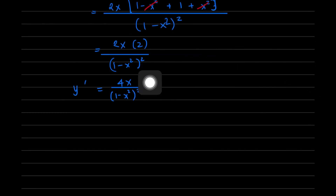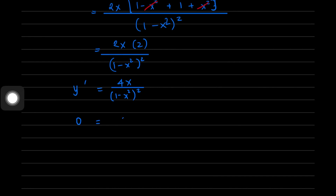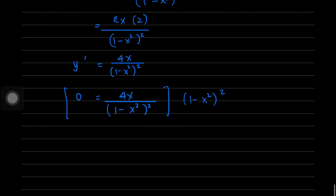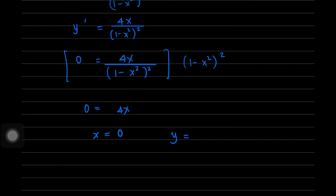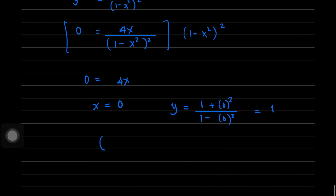Setting y' = 0: 4x/(1 - x²)² = 0, which gives x = 0. Substituting x = 0 into the original function: y = (1 + 0)/(1 - 0) = 1. So the critical point is at (0, 1).